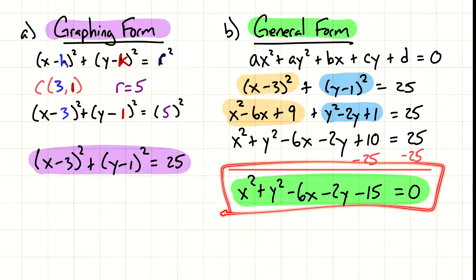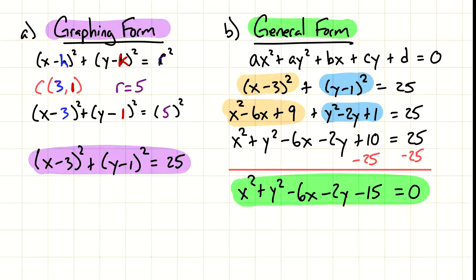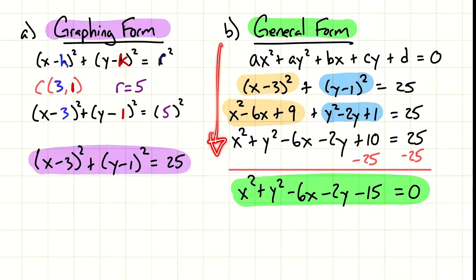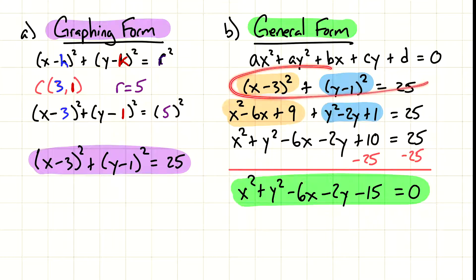So we ended up with the general form, which doesn't really help us graph easily. But the reason we just did this is because we want to see if we could go backwards — can we take the general form and go straight to graphing form? Now that we know how to do this process, maybe we can do it in reverse order.